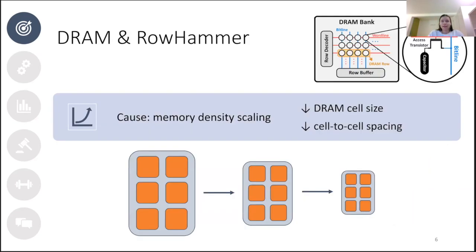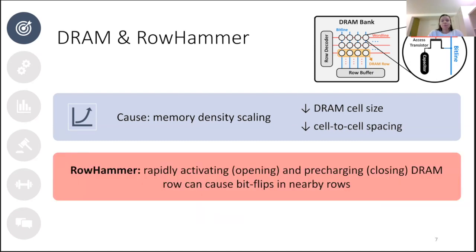Over the years, the size of a DRAM cell and cell-to-cell spacing have decreased significantly. DRAM chips today can store more data on the same surface area than chips from ten years ago, but the cells are now close enough to electrically interfere with each other. When we activate a specific row, adjacent rows also get activated slightly, causing vulnerable cells to lose some charge. If we keep opening and closing the same row repeatedly, a cell may eventually lose too much charge before it can be restored at refresh — and that is when a bit flip can happen.